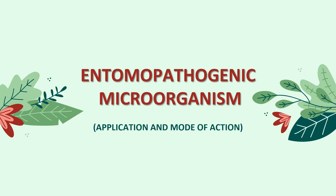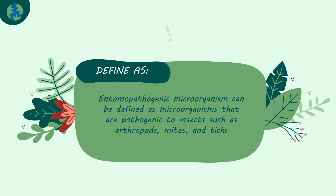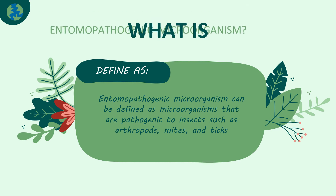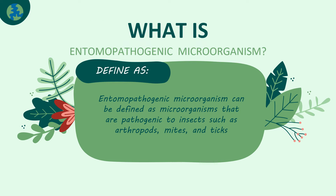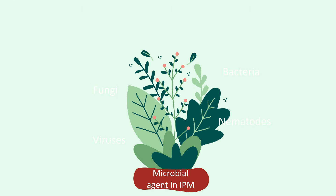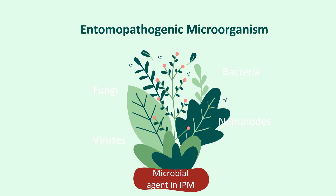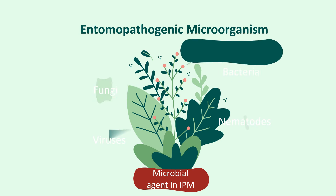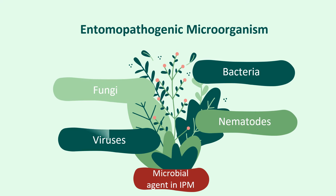Entomopathogenic microorganism application and mode of action. Entomopathogenic microorganisms can be defined as microorganisms that are pathogenic to insects such as arthropods, mites, and ticks. Some examples of entomopathogenic microorganisms that can be used as microbial agents in Integrated Pest Management (IPM) are bacteria, fungi, nematodes, and virus.